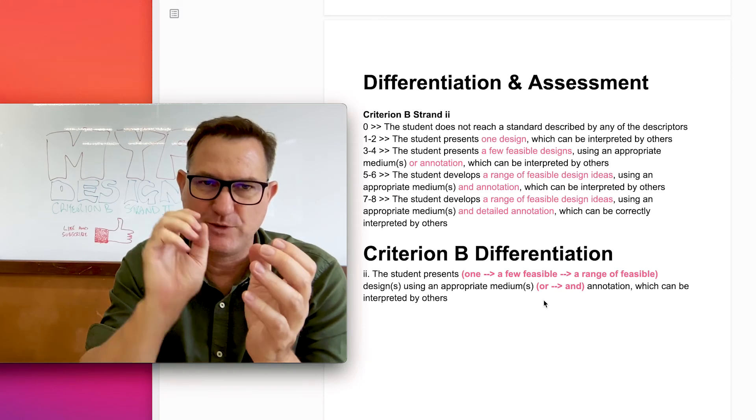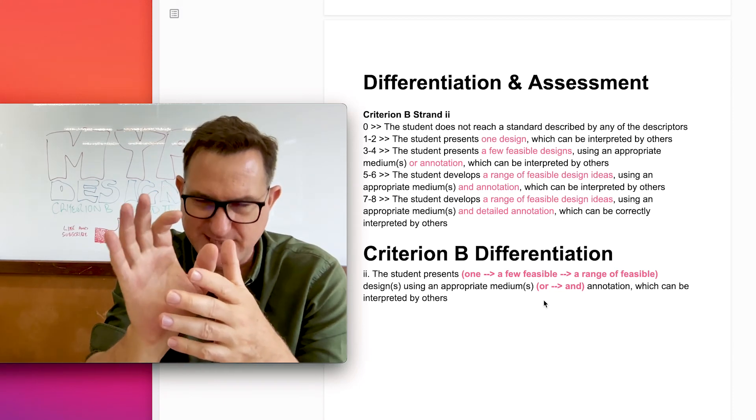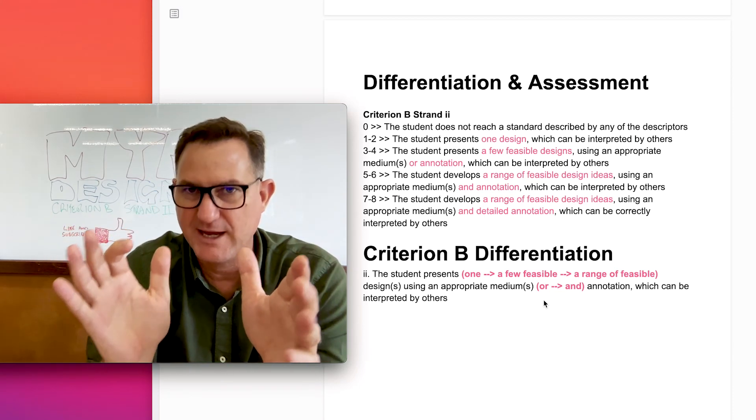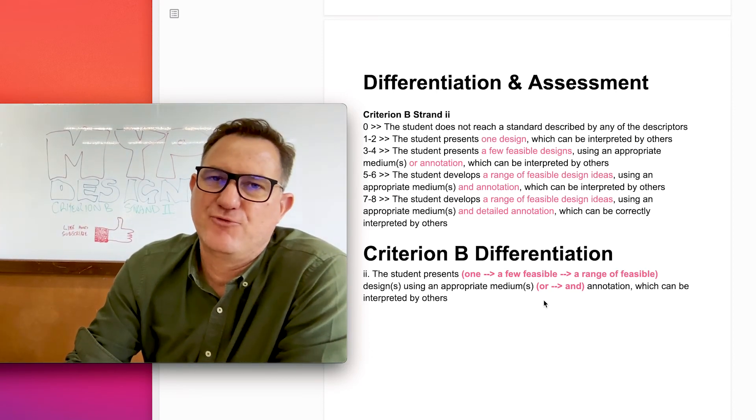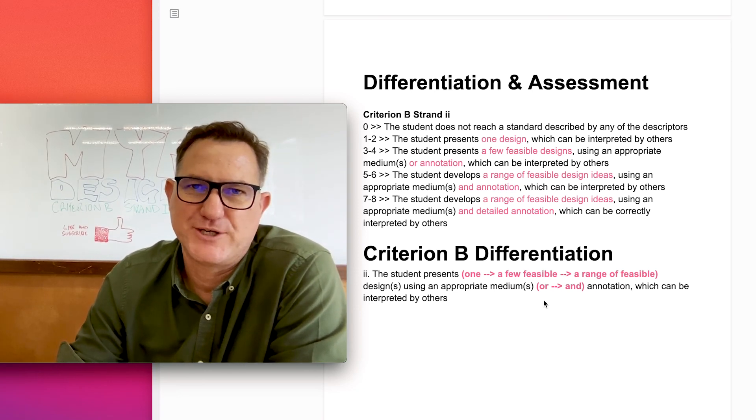Also, when you come to annotation, when you start annotating, basic annotations. Now let's convert it into detailed annotation. And that's how you get top marks for Strand 2 in Criterion B.